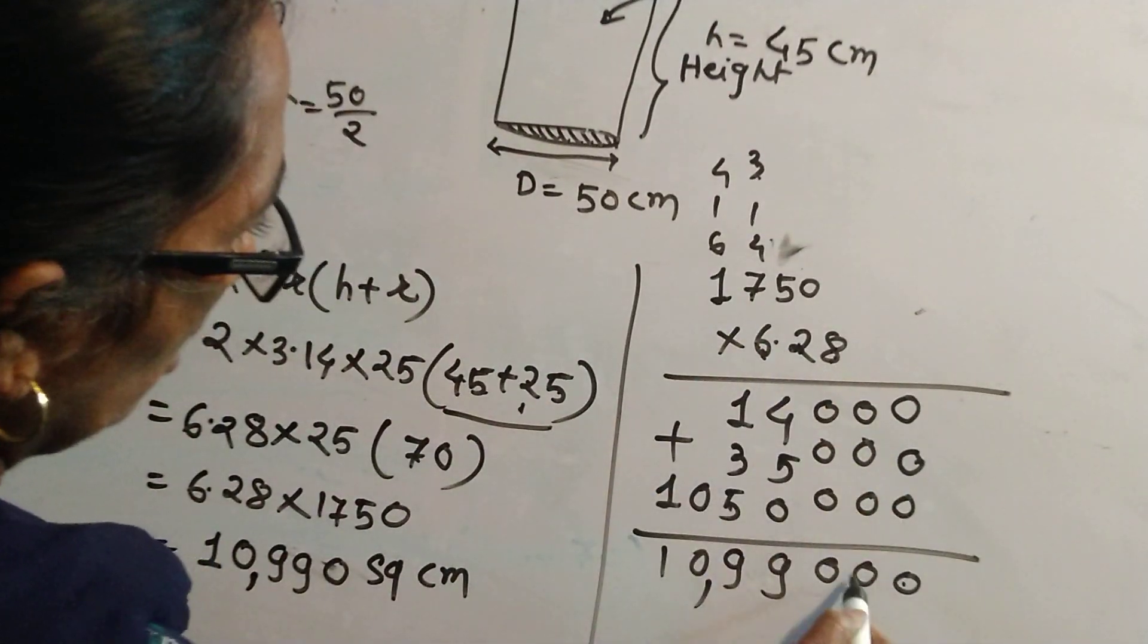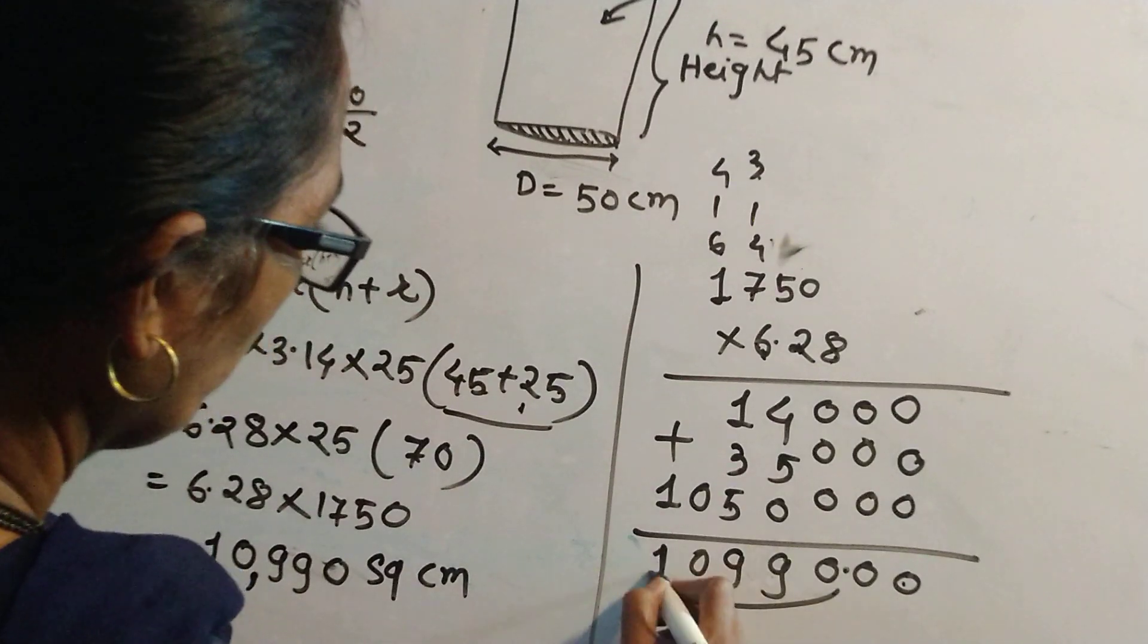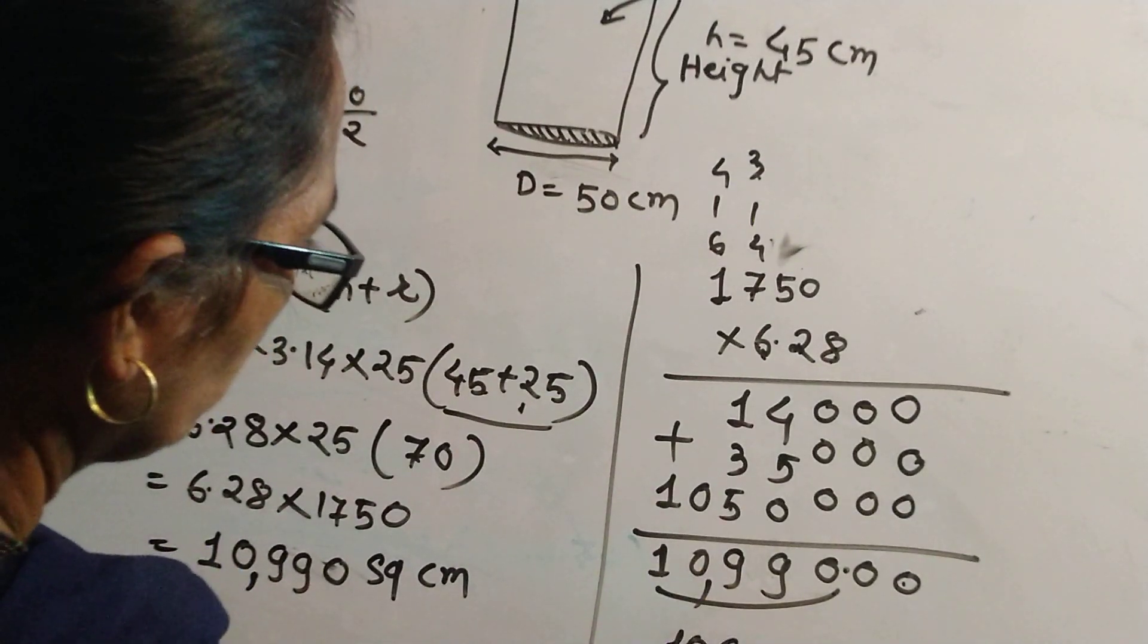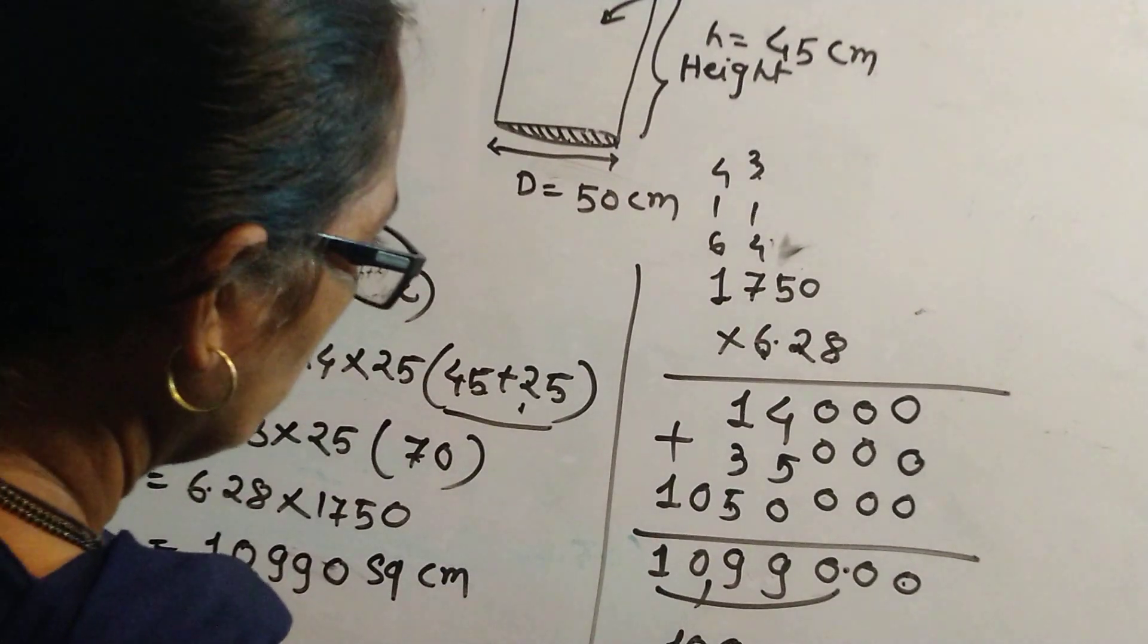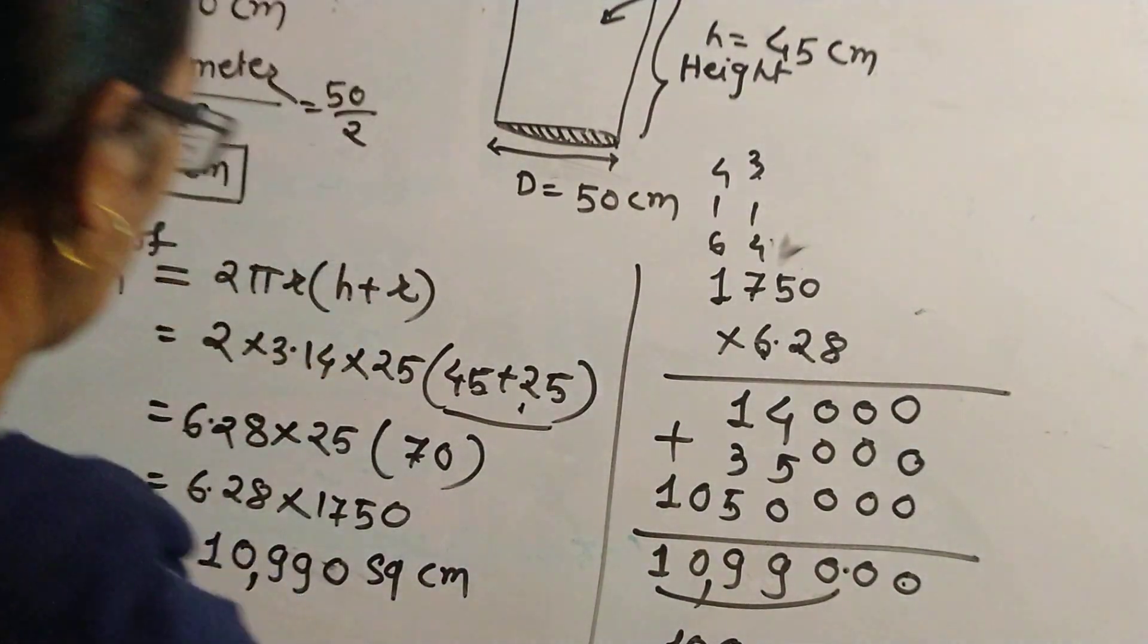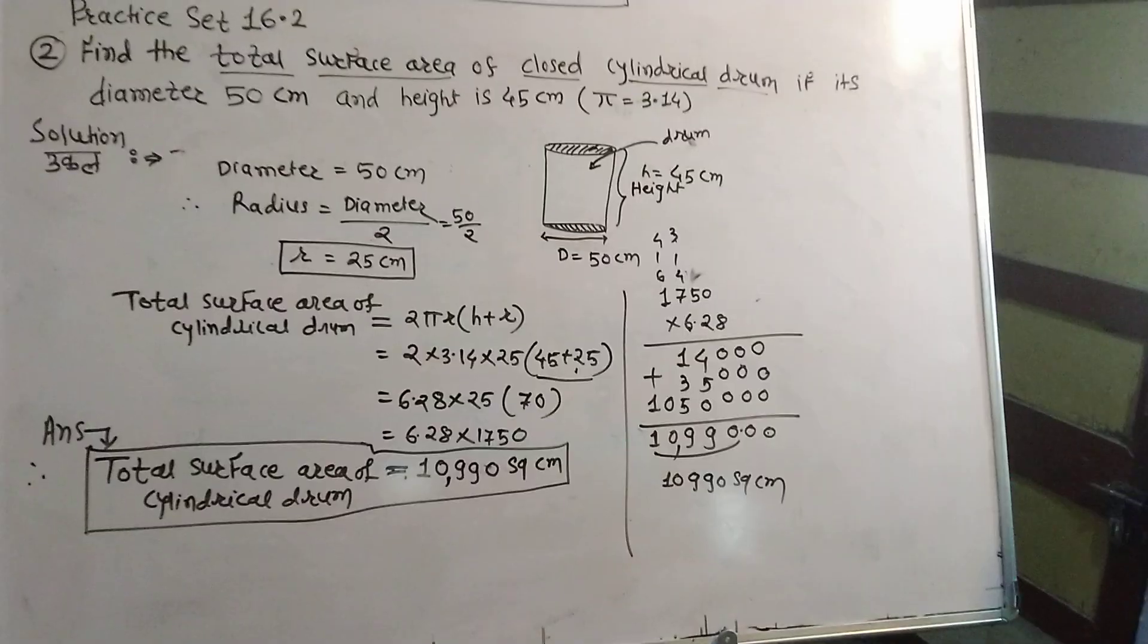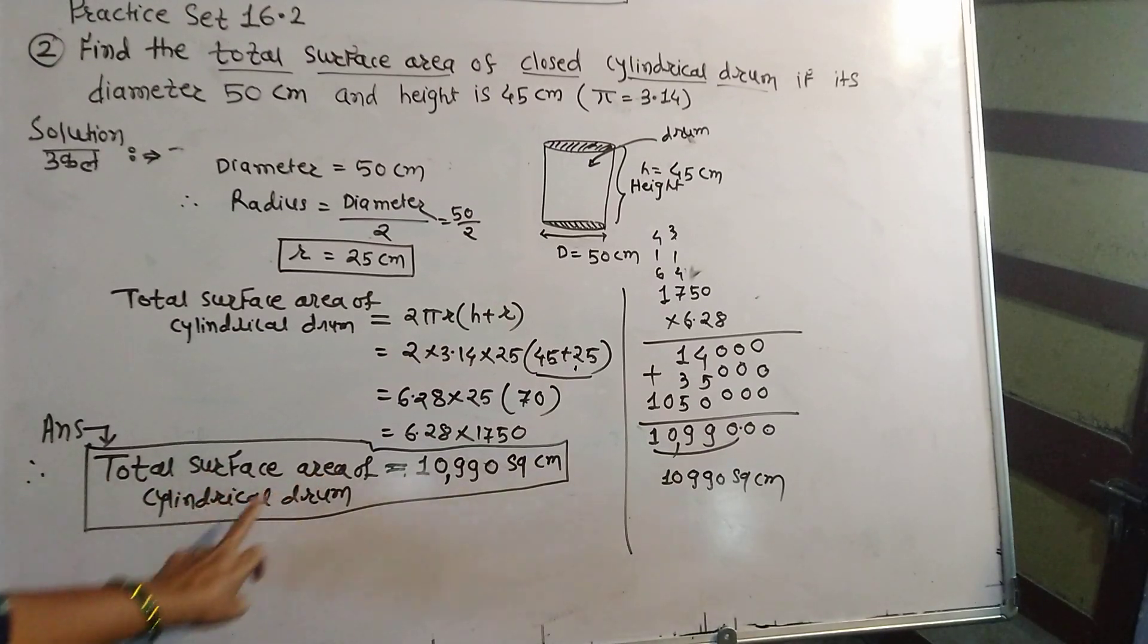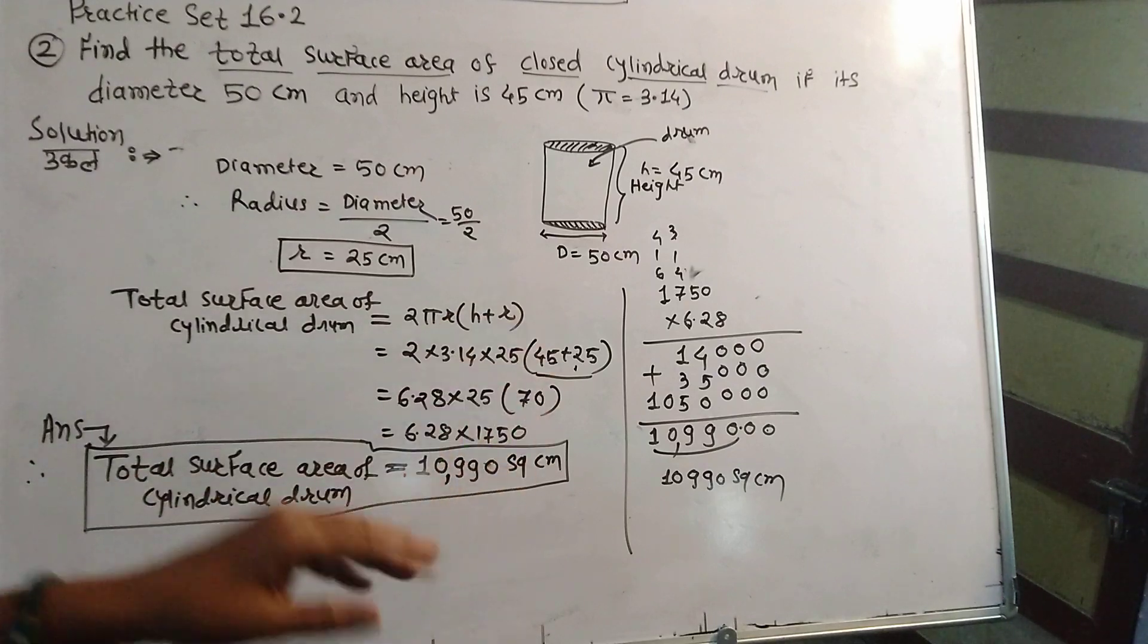The answer is 10,990 square cm. Therefore, total surface area of cylindrical drum equal to 10,990 square cm.